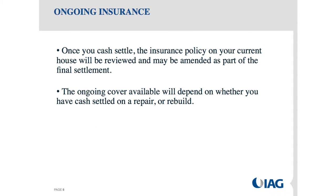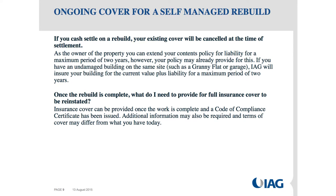In terms of ongoing insurance: once you cash settle, the insurance policy on your home will be reviewed and amended as part of the final settlement. The ongoing cover available depends on whether your home is a repair or a rebuild. If you cash settle on a rebuild, you've been indemnified for that loss and the policy is cancelled at the time of settlement. As the owner of the property, you can extend your contents policy for liability cover, and you can extend cover on any undamaged buildings on the site. But the policy on your house is cancelled.